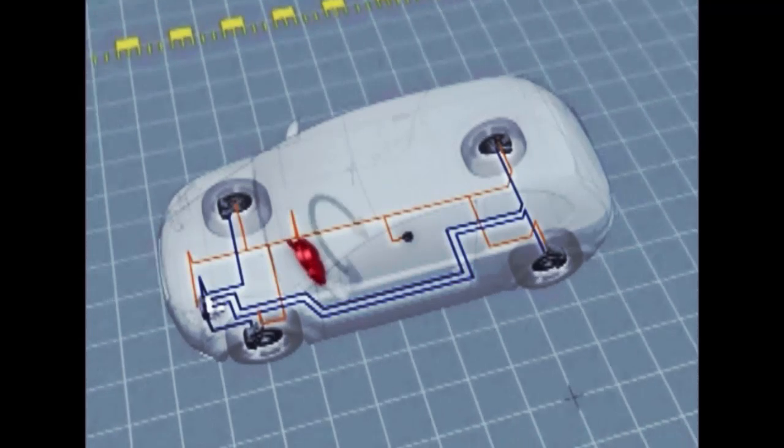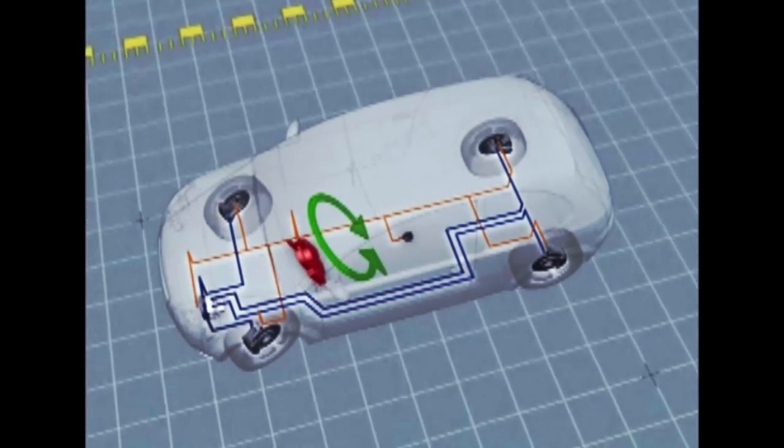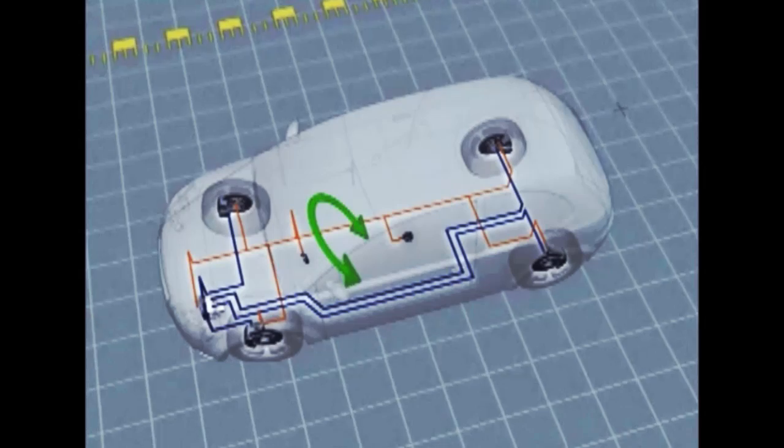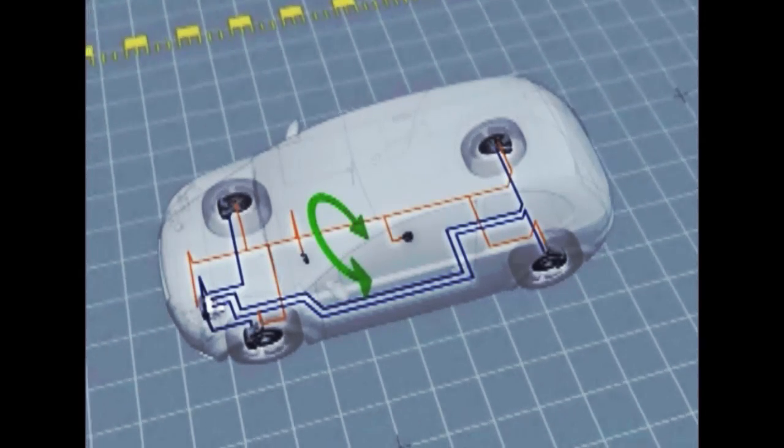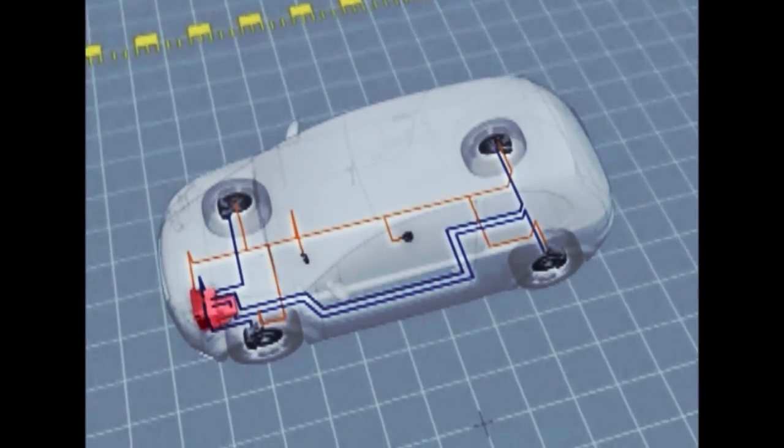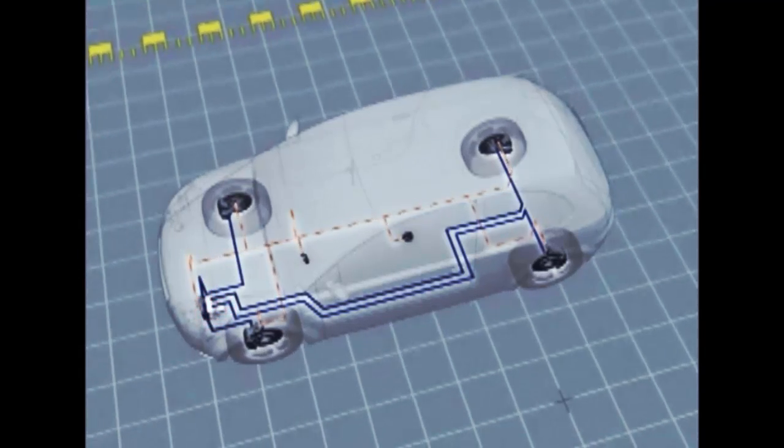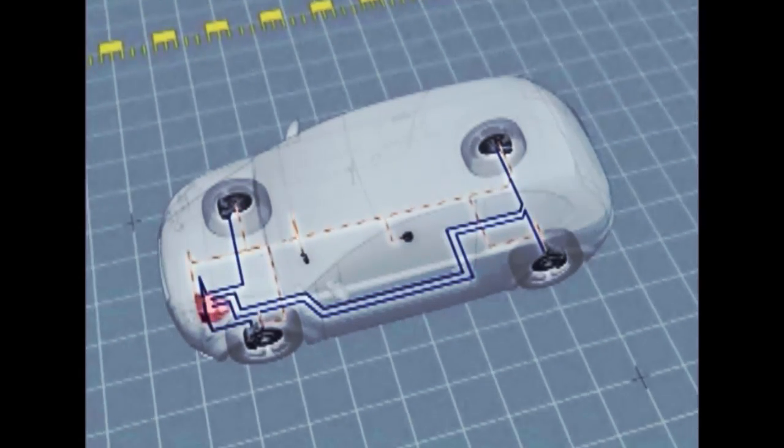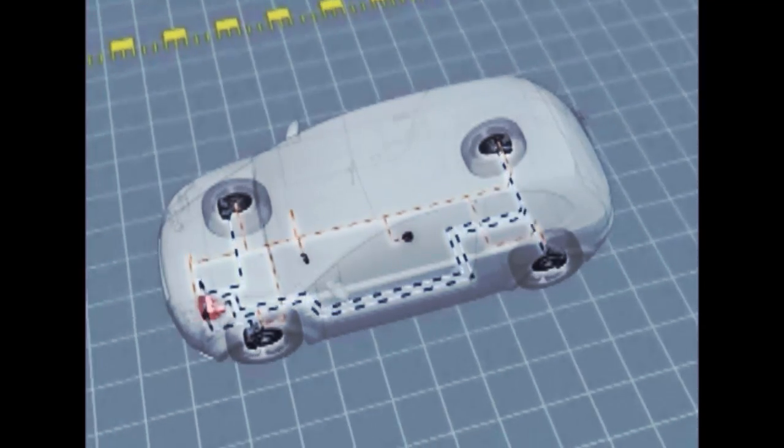A steering angle sensor reports the driver's steering intention. From the sensor signals, the control unit computes when and how it has to intervene. And the hydraulic unit controls brake pressure.